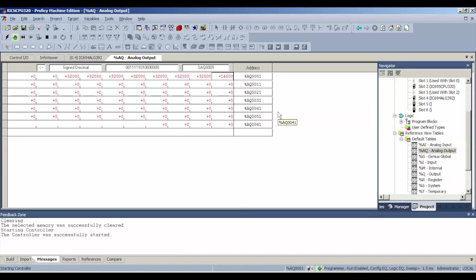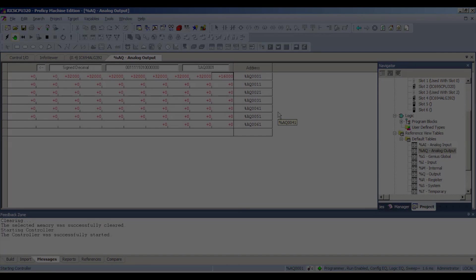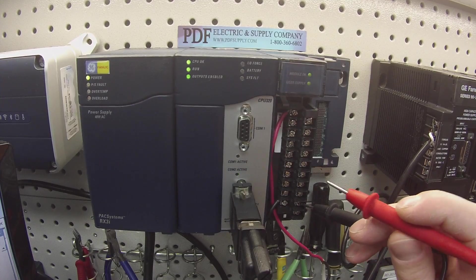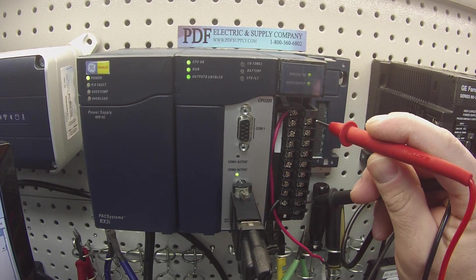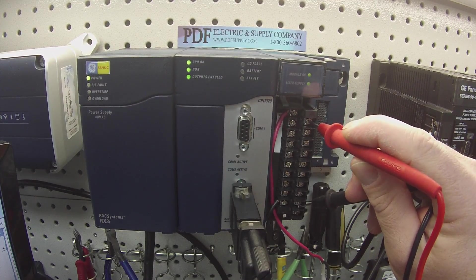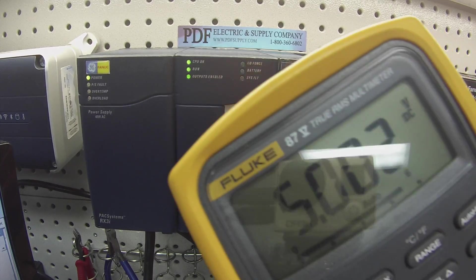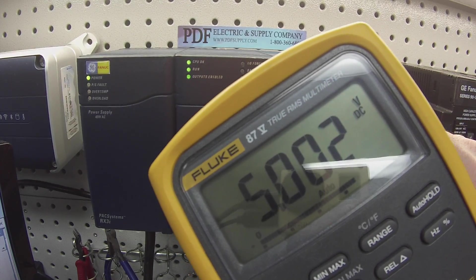Now, if I give it half the value, I obviously should get half of the voltage. I'm looking for five volts on channel one right now. Hook up to my 18 and my channel one, which is terminal number two, and I have 5.002 volts.